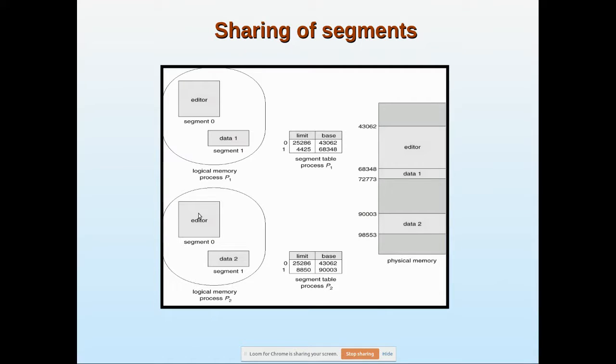Let us consider a network environment where particular software is used by all, so there will be a common editor. Suppose a Word document stored in Microsoft Word will be stored in the server but it will be shared by all the users. They generate their own Word file, so you can consider this as data one and here is another data two.